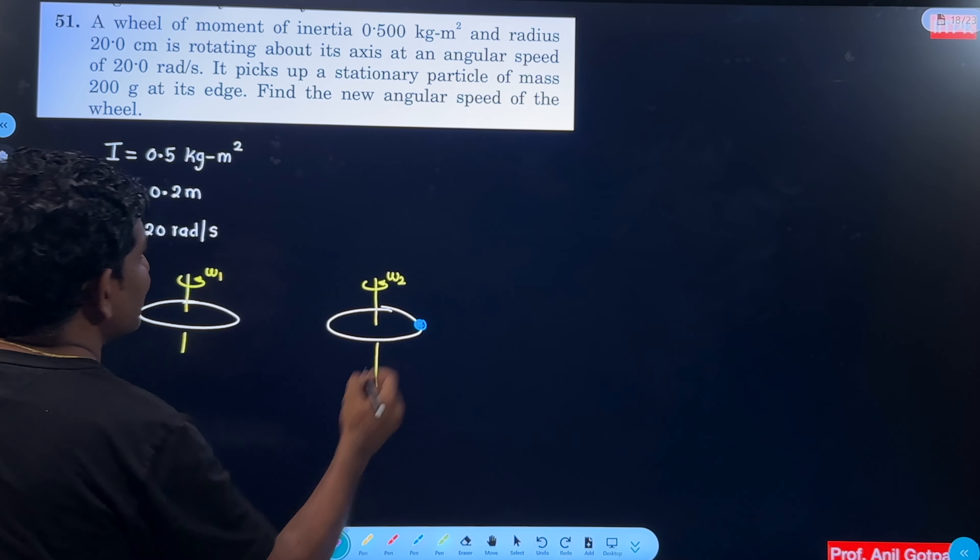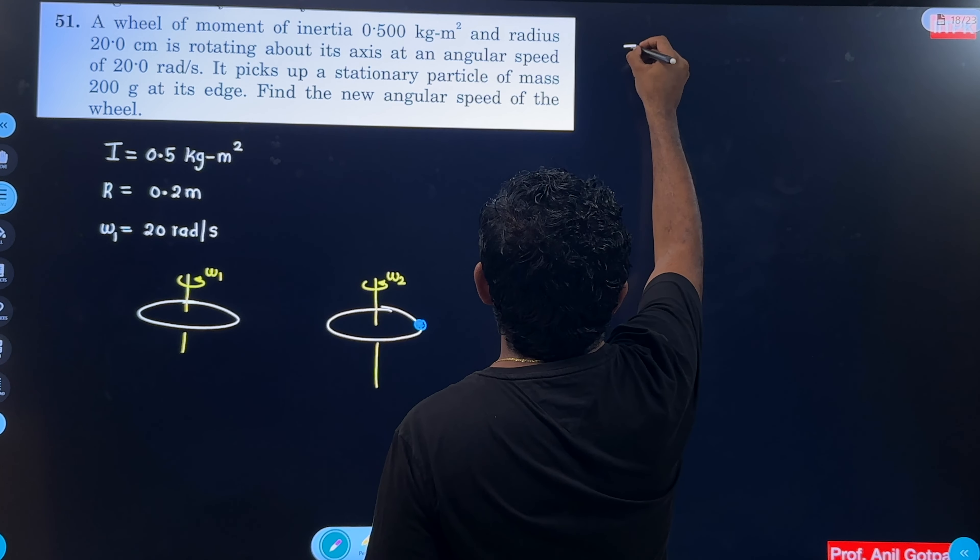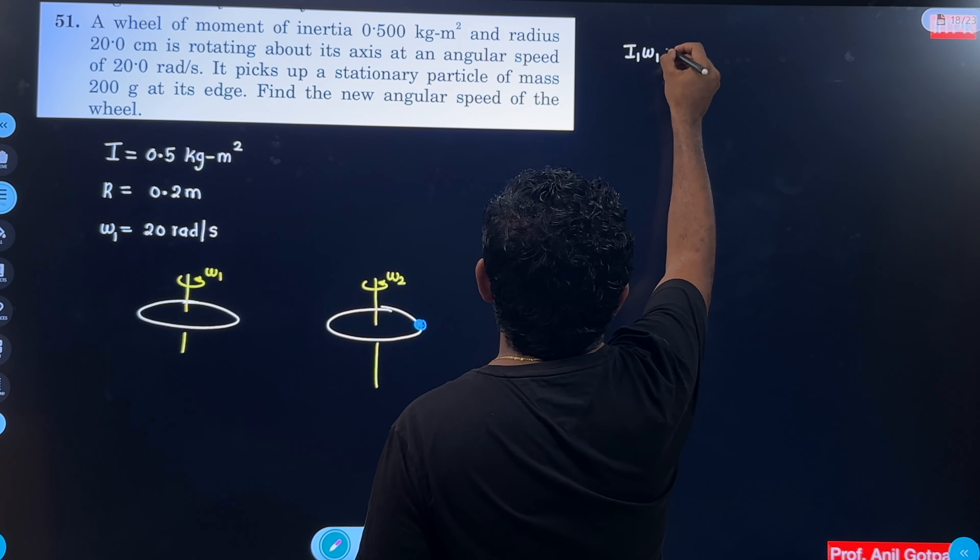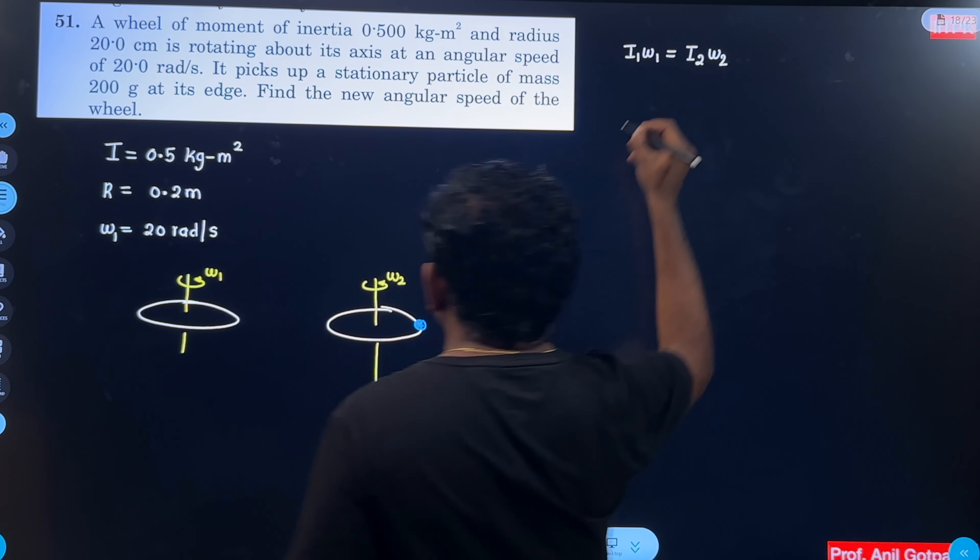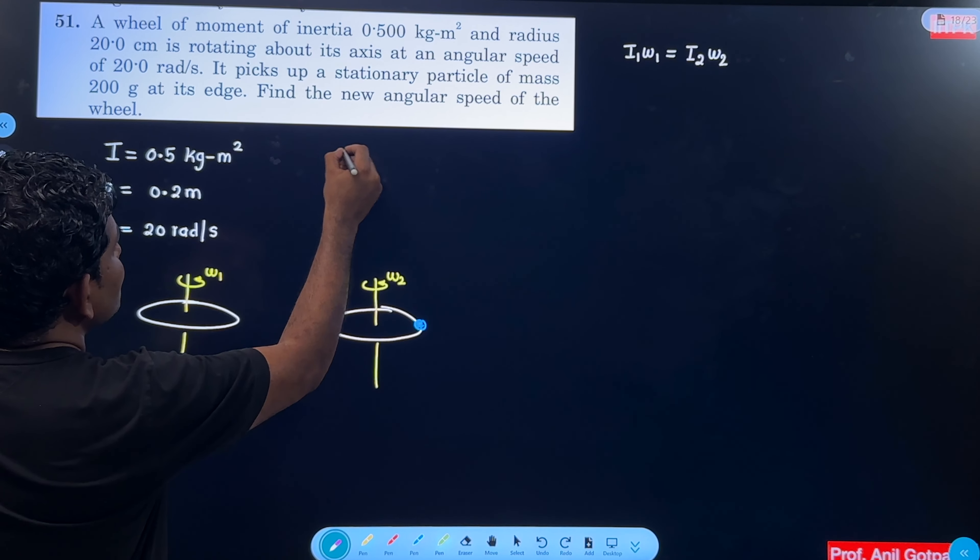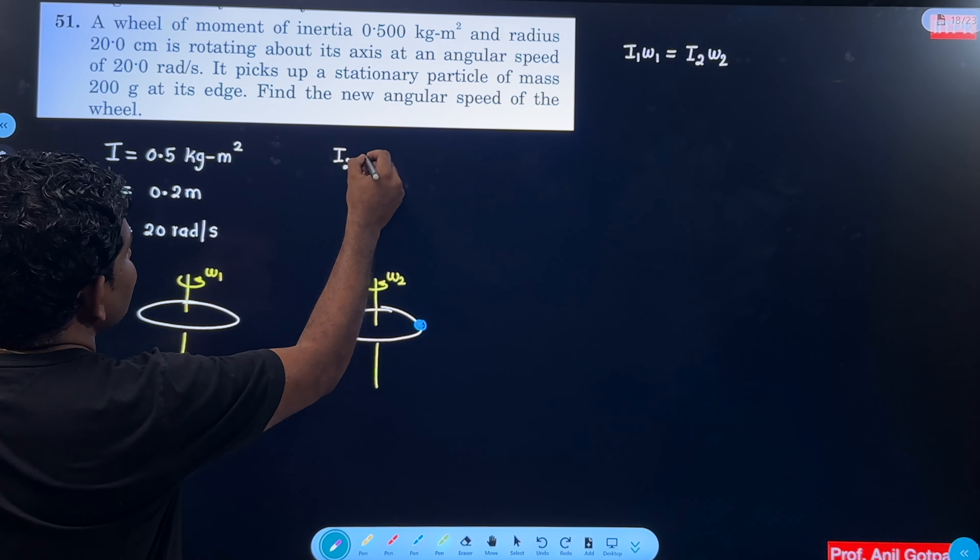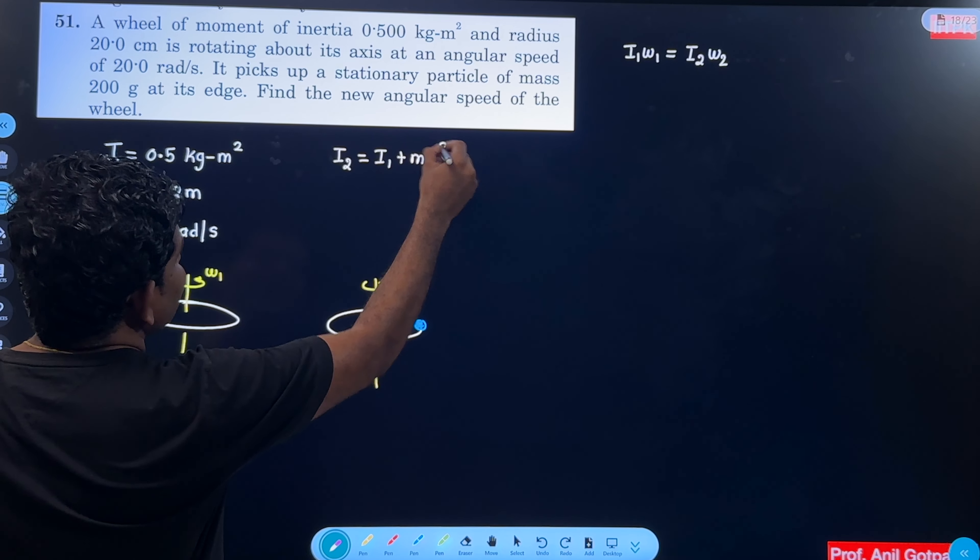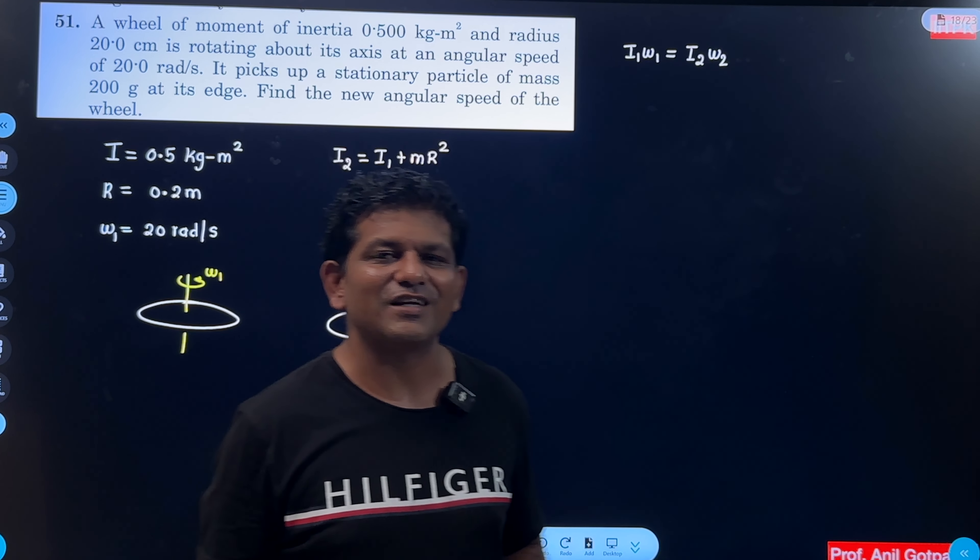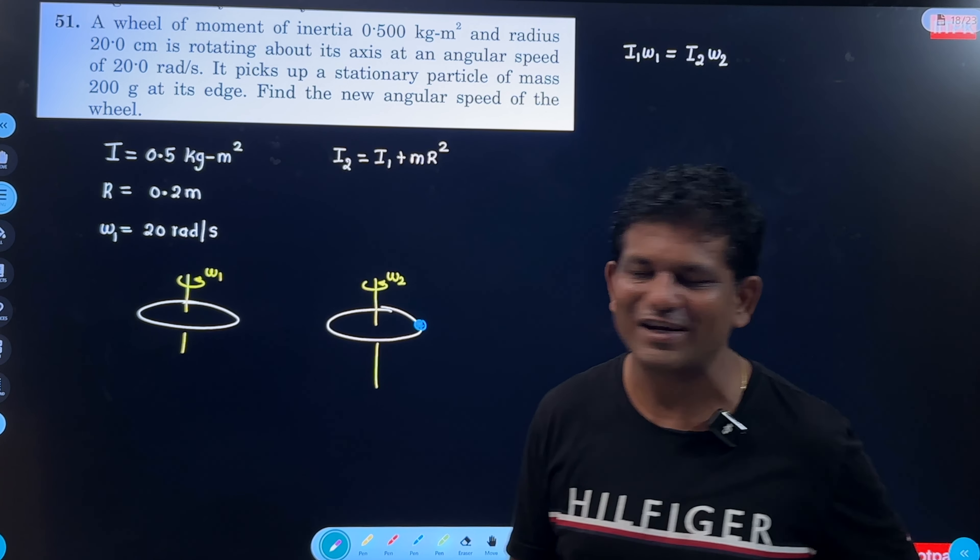So we can write I1 omega 1 is equal to I2 omega 2. Correct? So new moment of inertia will be wheel moment of inertia plus the particle moment of inertia. Particle moment of inertia is mR square. Correct?